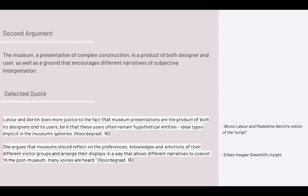The second supporting quote is from Eileen Hooper-Greenhill, who argues that museums should reflect on the preferences, knowledges, and emotions of their different visitor groups, and arrange displays in a way that allows different narratives to coexist — in the Post Museum, many voices are heard. So even while there is an implied script of instructions, we must also account for the many diverse groups of visitors, and ensure the museum is a place that encourages subjectivity and allows different narratives to coexist.